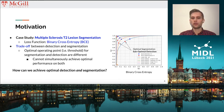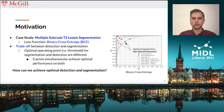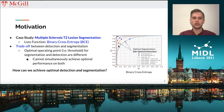It's important to note that curves alone are not sufficient to understand the performance characteristics of the model. In particular, we can see that the optimal segmentation operating point, the red dot, underperforms on the lesion-level detection curves, particularly in the case of small lesions. This raises an important question: how can we achieve optimal detection and segmentation performance at the same time?